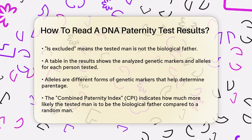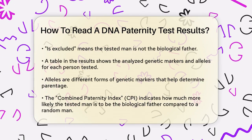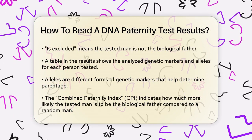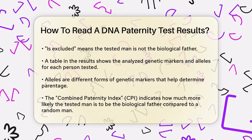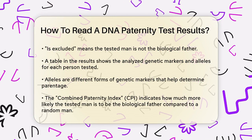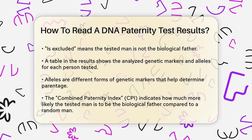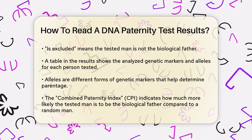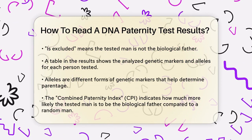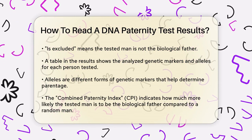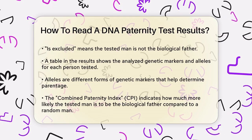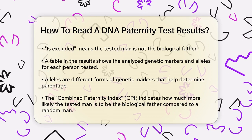If the statement says 'cannot be excluded,' it means the tested man is likely the biological father, as all the data supports this relationship. On the other hand, if it says 'is excluded,' it means the tested man is not the biological father, because the data does not support a relationship.